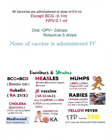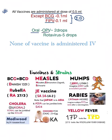First, some things to remember: all vaccines are administered at a dose of 0.5 ml, but there are two exceptions — BCG and fIPV are given at 0.1 ml, meaning the route of administration is intradermal. For oral vaccines, there are only two in the entire national immunization schedule: the oral polio vaccine (OPV), given as two drops, and the oral rotavirus vaccine, given as five drops, which prevents diarrhea.